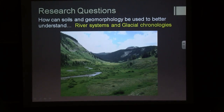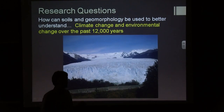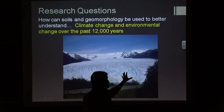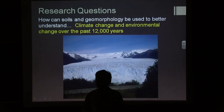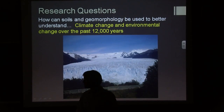That brings us to the second question: how do we use this data to say something about climate change and environmental change? This image is from Argentina — we don't have glaciers like this in Colorado. We do have some perennial snow banks that used to be glaciers; by definition they're glaciers because they show signs of past movement, but all we have here are the deposits left behind. So in Colorado, we go up, map the landforms, find their ages, and piece together the story of glacial chronologies — when glaciers were advancing and receding.